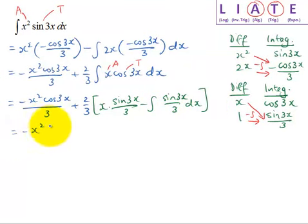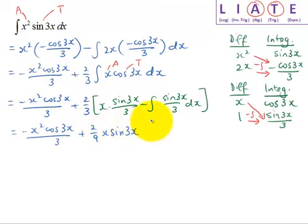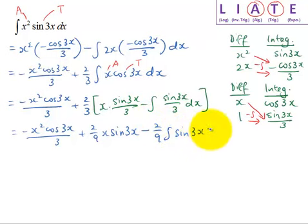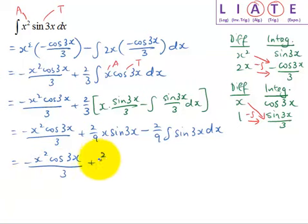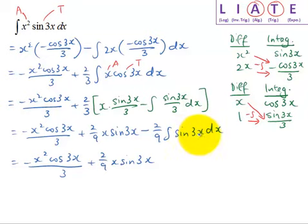Let me write this in a nicer manner. I have two thirds and one third, which makes 2 over 9. I can factor out two thirds and one third, giving negative 2 over 9. Finally, integrating sine 3x gives negative cosine 3x over 3. The negative offsets the minus to give a positive, and 2 over 9 divided by 3 gives 2 over 27.